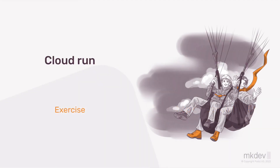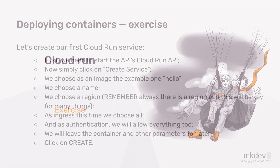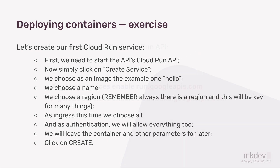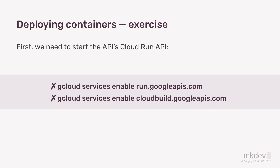We're going to do the first exercise, which is super simple, and we're going to see it step by step. First thing first, we need to start the APIs — like always, where we have the APIs started. You will see that there are two, and I will show you why there are two.